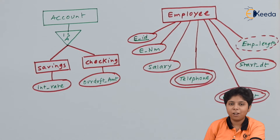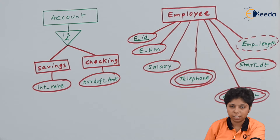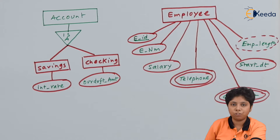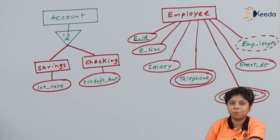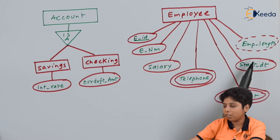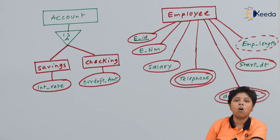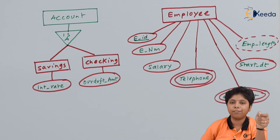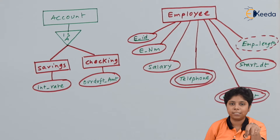For the employee entity, E_ID is the primary key. Other attributes include employee name, salary, telephone as a multi-valued attribute, and dependents also as a multi-valued attribute since an employee can have more than one dependent. The start date is stored as a base attribute, and from it we derive the length of employment as a derived attribute.